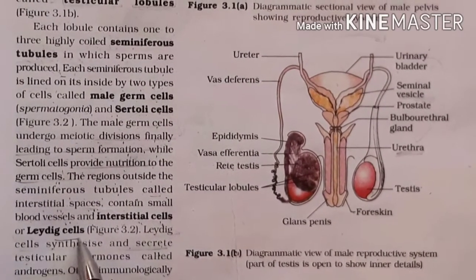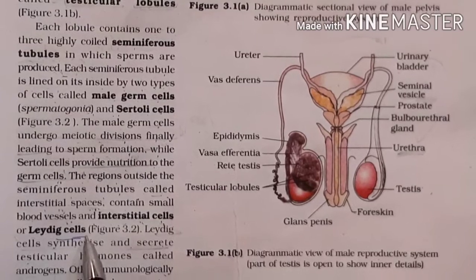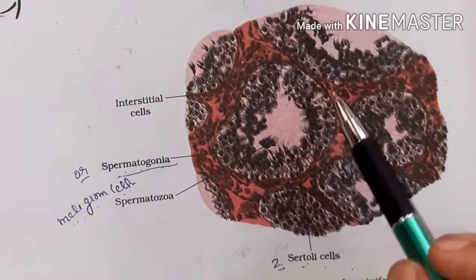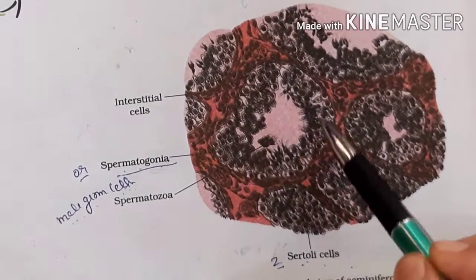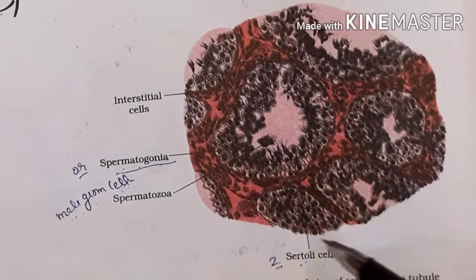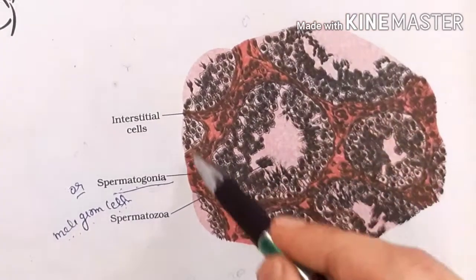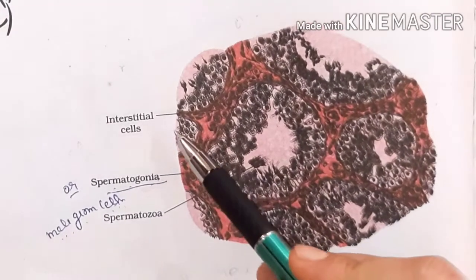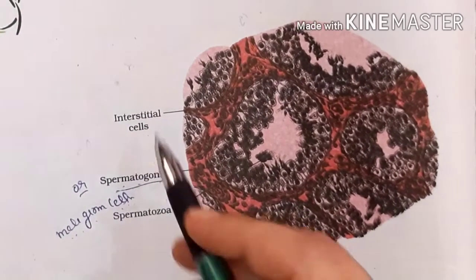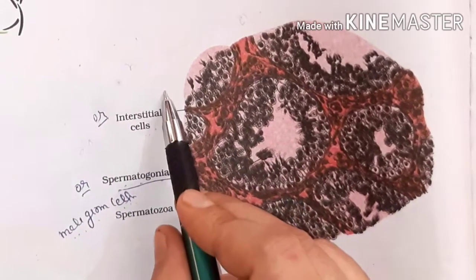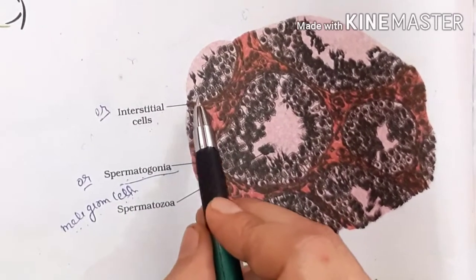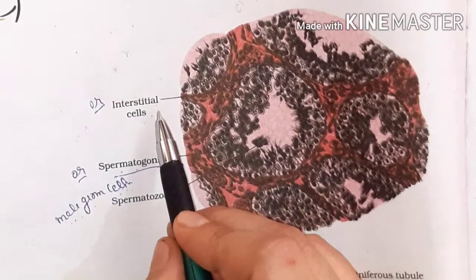The interstitial cells are also called Leydig cells. These Leydig cells or interstitial cells have a very important function: they secrete the male hormone. The male hormone belongs to a group called androgens, of which testosterone is a part.